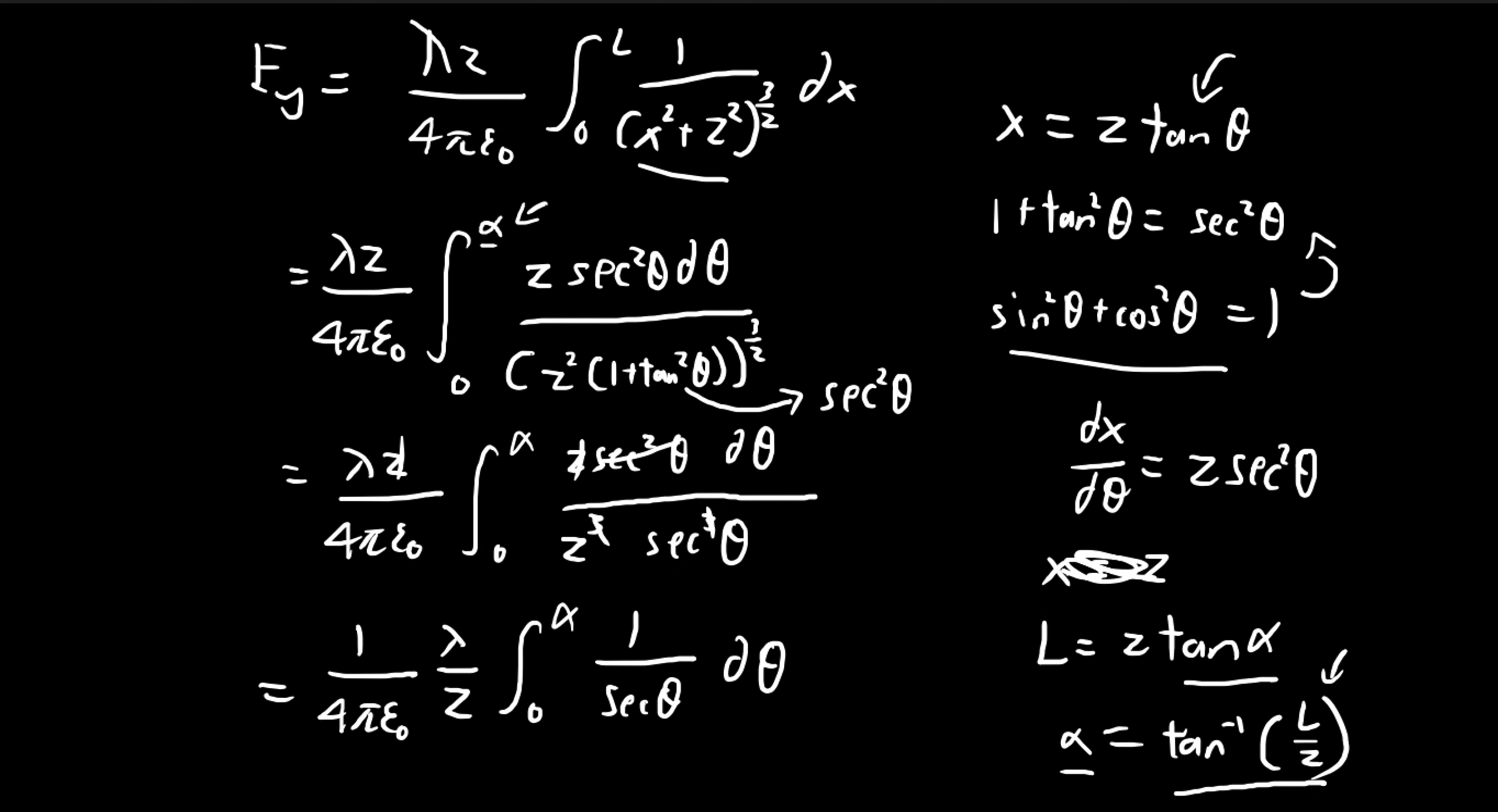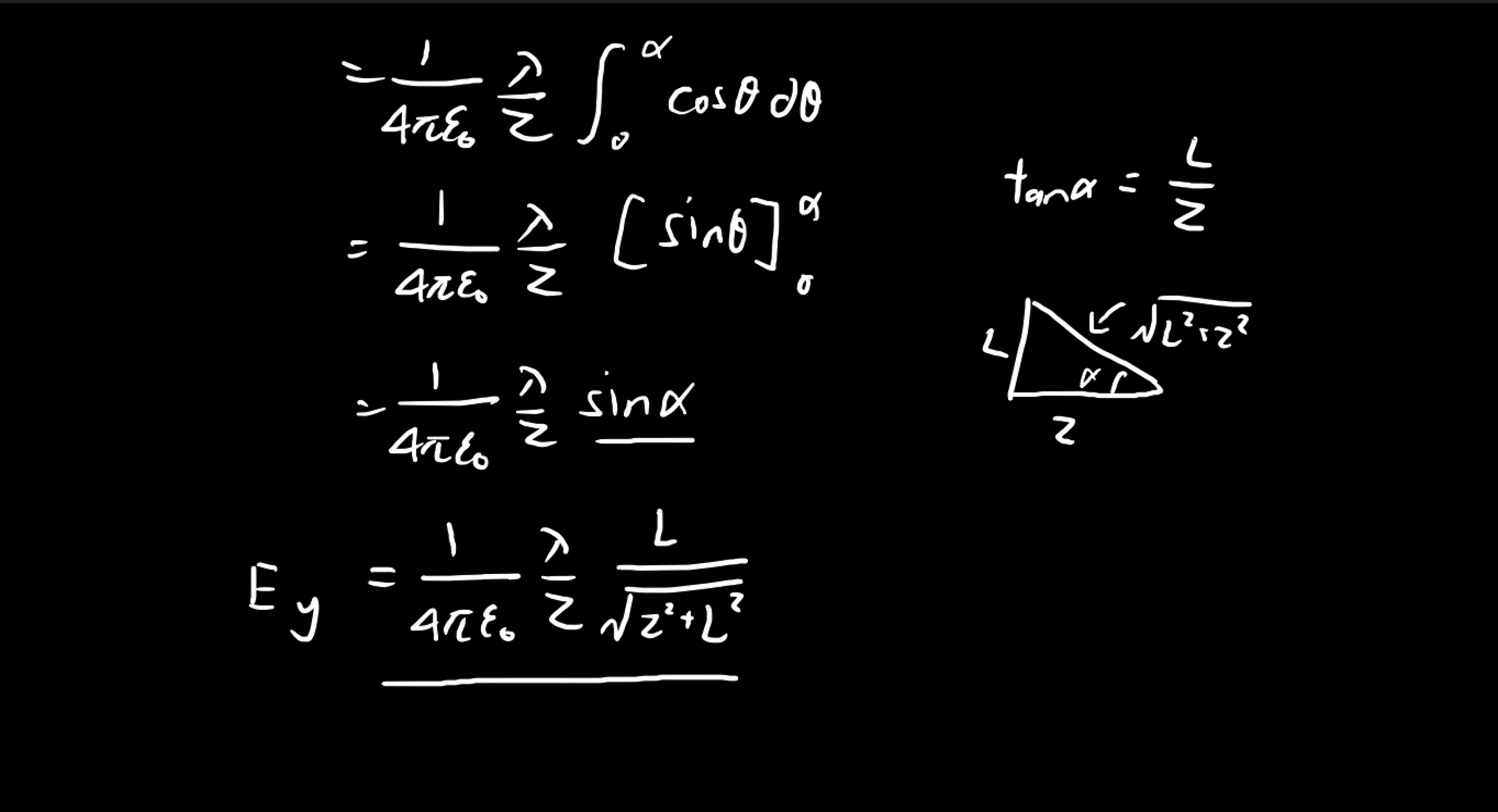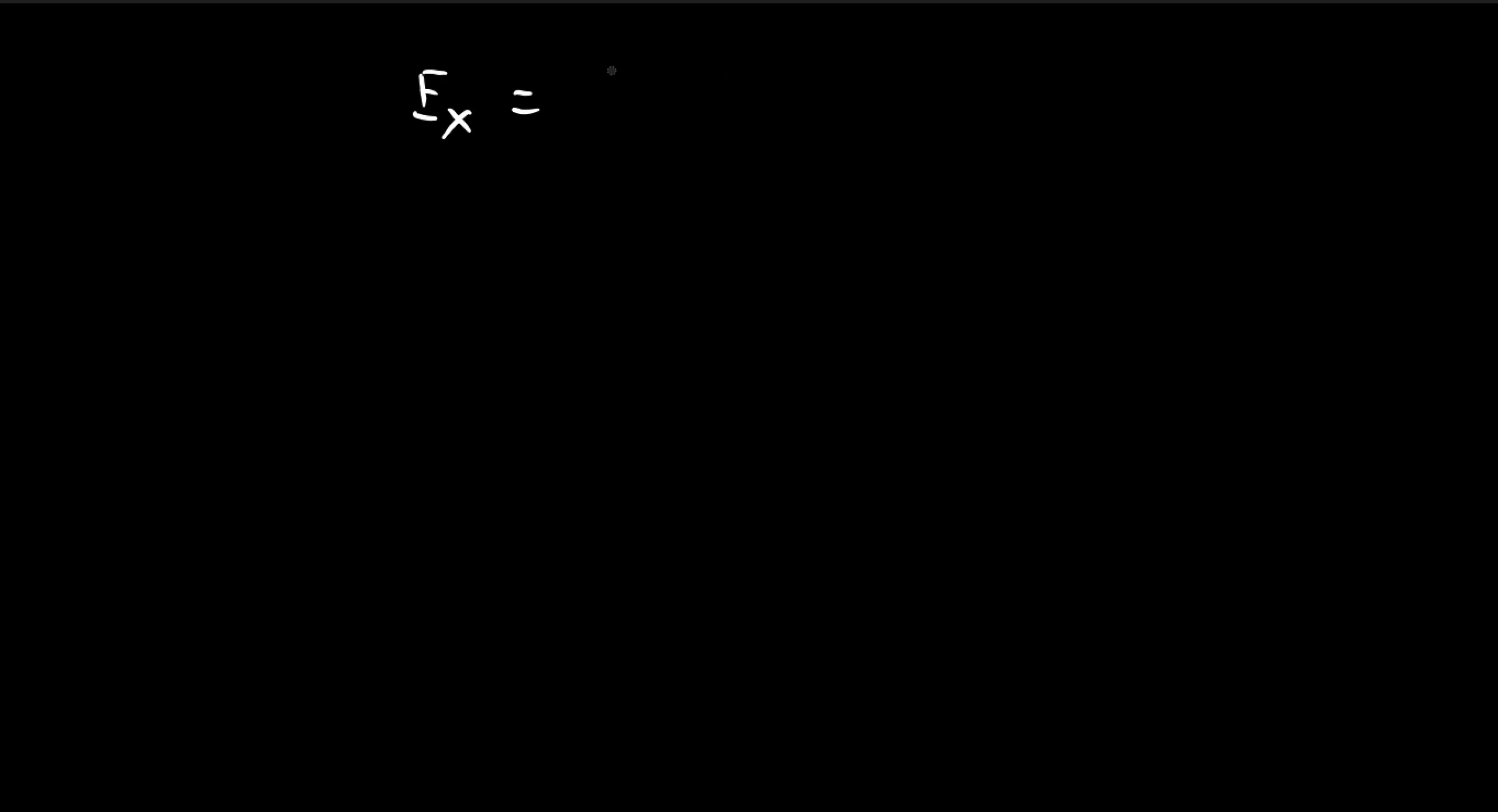So for the next step, we're going to have to find the electric field in the x-direction. And that's going to be very easy, given all the steps that we already have, because we saw that we found the y-direction by applying the sine theta to this integral here. Finding the electric field in the x-direction, all we have to do is just change the sine theta into a cosine of theta. So let's just change that and try to evaluate the integral.